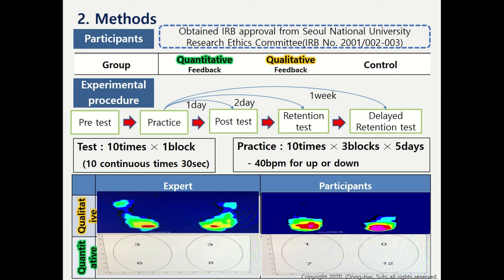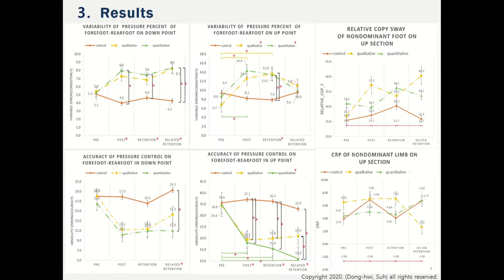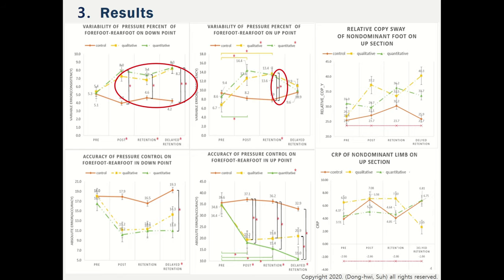The variability of pressure percent of forefoot and rear foot shows that the quantitative group significantly increased compared to the control group on post-retention and delayed retention test of the down point, and on the retention test of the up point. Only the delayed retention test on the down point and retention test on the up point showed significance for the qualitative group compared to the control group.